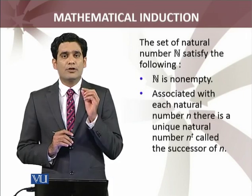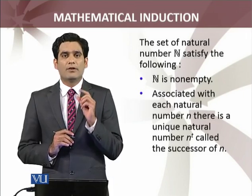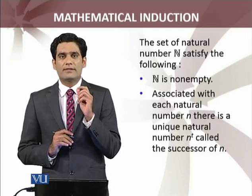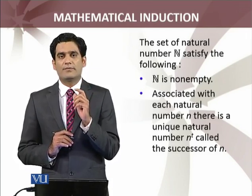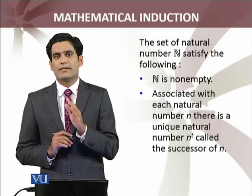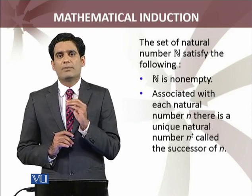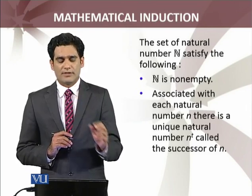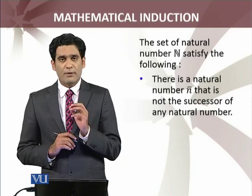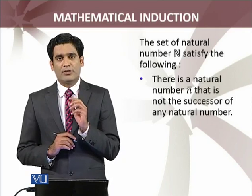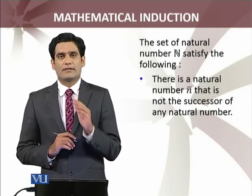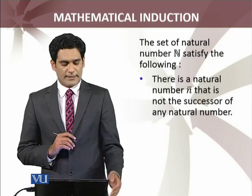The second property is that corresponding to each natural number, we can associate a unique number — what we call the successor, the immediate successor of that natural number. For any natural number n, its successor is n plus 1. The third property is that there is a natural number, denoted n-bar, which does not have any predecessor — it has no predecessor.